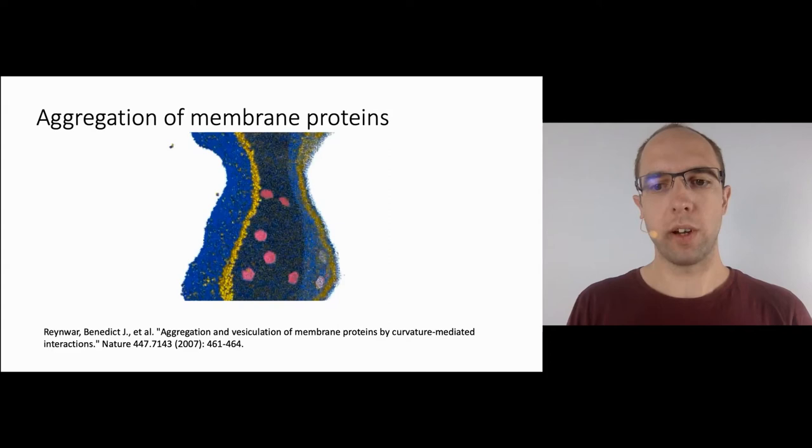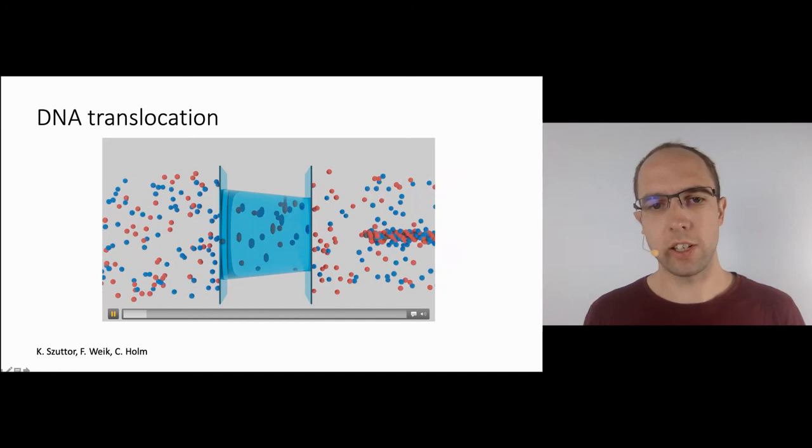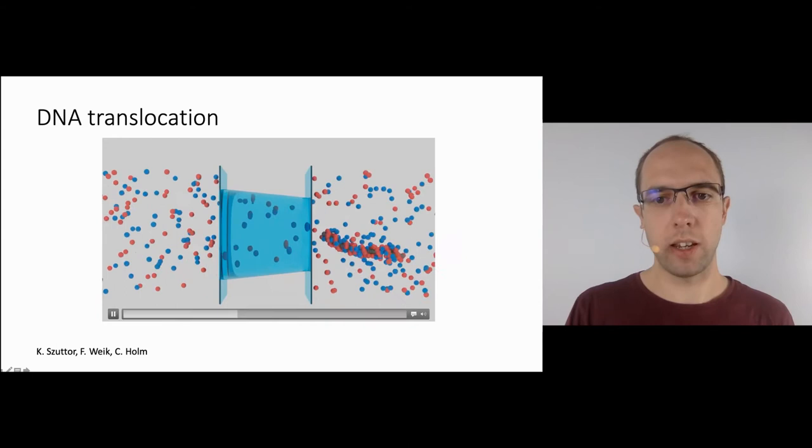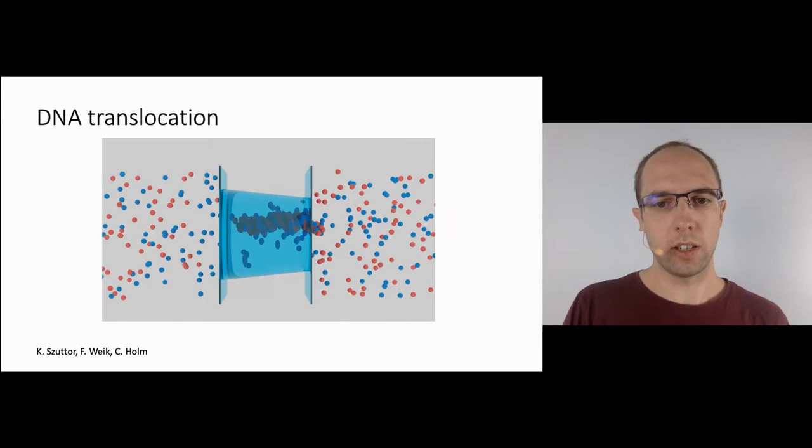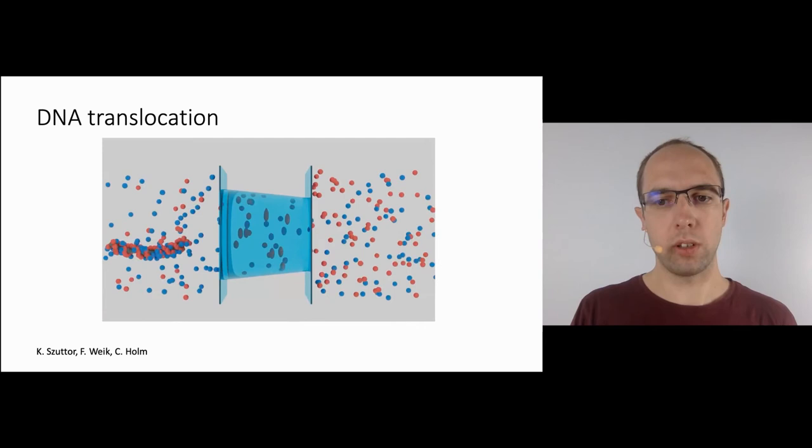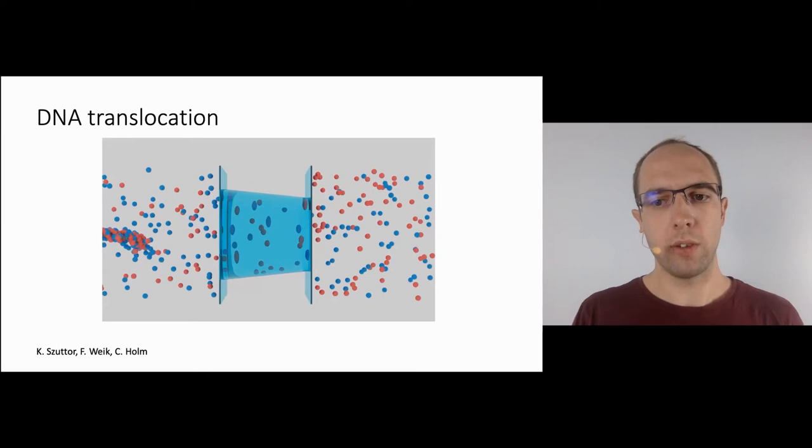This example shows the translocation of a coarse-grained double-stranded DNA molecule from one electrolyte reservoir to another through a nanoscale conical nanopore. The translocation is driven by an external electric field. While the DNA translocates through the pore, the ionic current is modulated. With a similar model system, experimental findings have already been reproduced, and currently, this system is used to investigate the influence of pore conicity as well as possible finite size effects that may play a role for the translocation of more complex DNA origami structures.